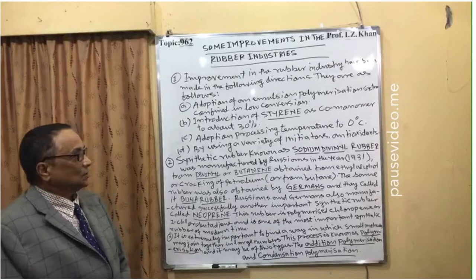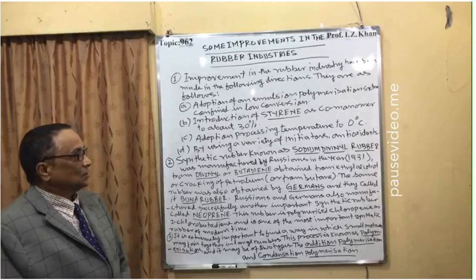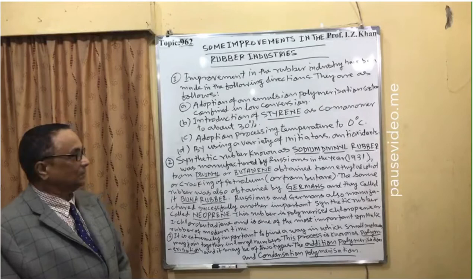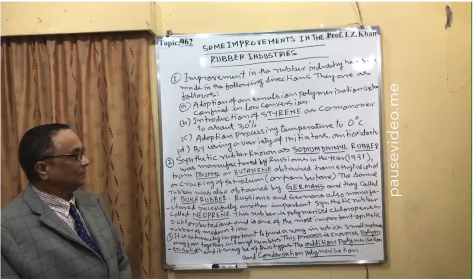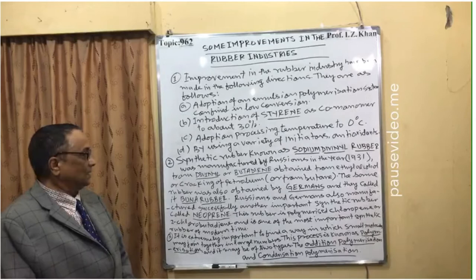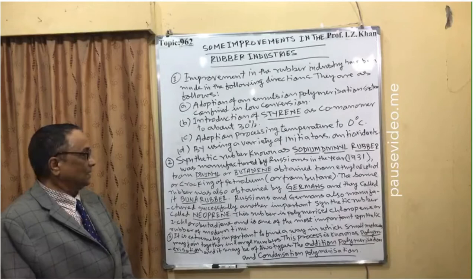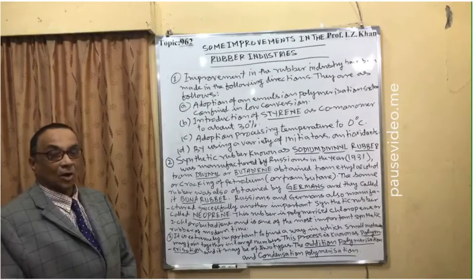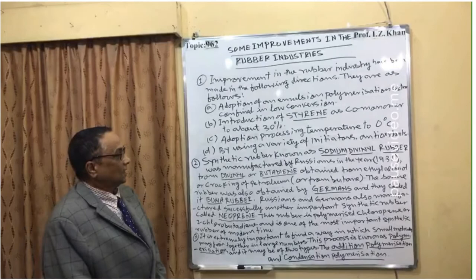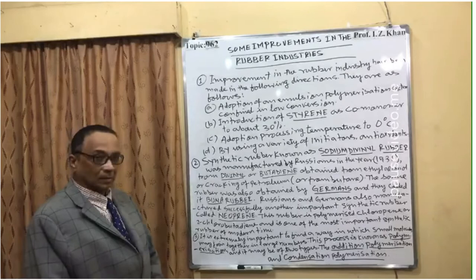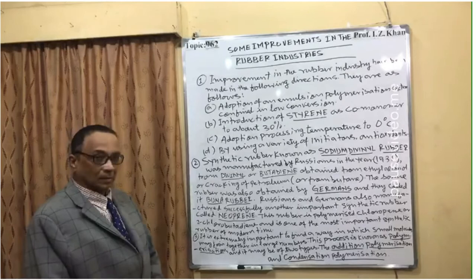Number two: a synthetic rubber known as sodium divinyl rubber was manufactured by Russians in the year 1931. It was produced from divinyl or butadiene obtained from ethyl alcohol or by cracking of petroleum. Russians were successful in producing this rubber in 1931. The same rubber was also obtained by Germans.